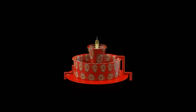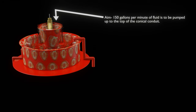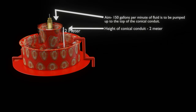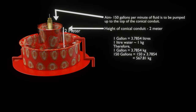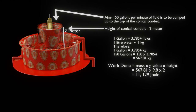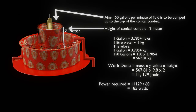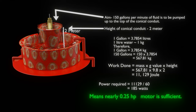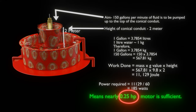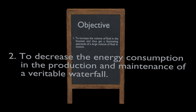Let us get a rough idea of the energy consumed by the fountain designed by Nikola Tesla. Suppose 150 gallons per minute of fluid is required to be pumped up to the top of the conical conduit, which is at say 2 meter height. Therefore, work done by the shaft in one minute will be approximately 11,129 joules. Therefore, power required by the pump will be 185 watts, meaning nearly a 0.25 horsepower motor will be sufficient. Therefore, a less amount of energy is required in the production and maintenance of the waterfall in Tesla's fountain, so Tesla's second objective has been achieved.